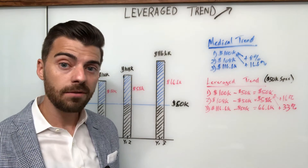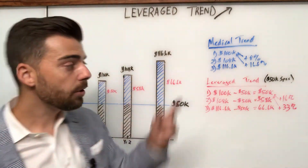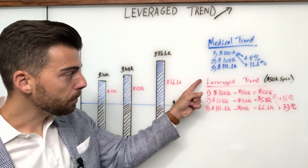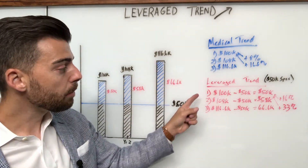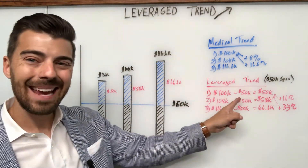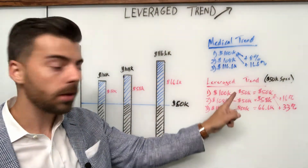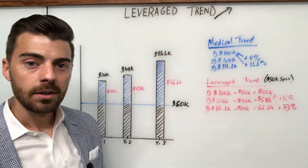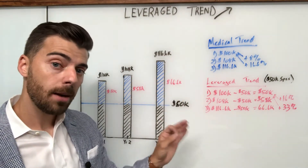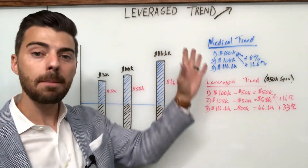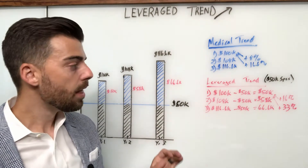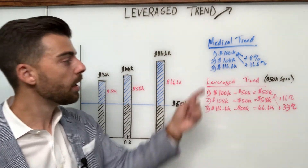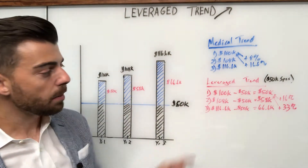Leverage trend is the notion that medical trend being applied to a stop-loss case that has the same deductible year-over-year — very important to keep the same deductible year-over-year — suggests that the impact to the stop-loss carrier is a steeper trend line. They're going to be reimbursing a higher percentage increase year-over-year than normal medical trend. So let's look at the math on that.